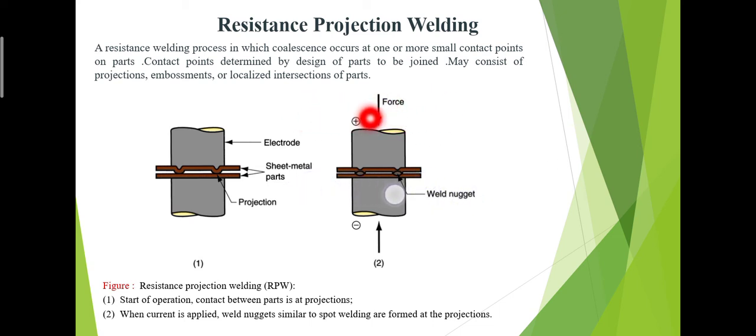Sometimes a question comes to mind: projection welding is particularly applicable to mass production. Mass production means large quantity production. Production types include batch production and mass production. Batch production is order-based production, and there is project-based production. Resistance projection welding is very useful in automobile industries and aircraft industries.